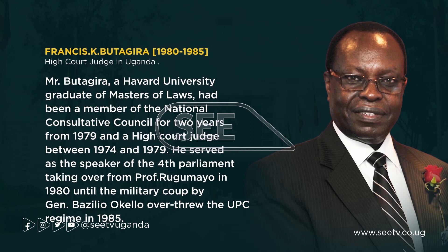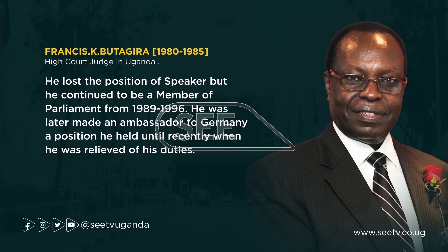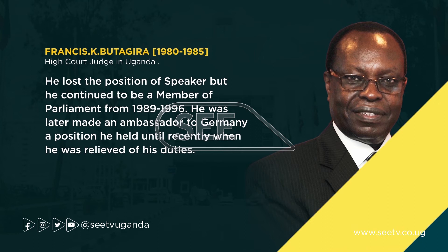Francis K. Butajira, a Harvard University graduate with a Masters of Law, had been a member of the National Consultative Council for two years from 1979 and a High Court Judge between 1974 and 1979. He served as the Speaker of the Fourth Parliament, taking over from Professor Rugumayo in 1980, until the military coup by General Basilio Okero overthrew the UPC regime in 1985. He lost the position of Speaker but continued to be a member of Parliament from 1989 to 1996. He was later made an ambassador to Germany, a position he held until recently when he was relieved of his duties.